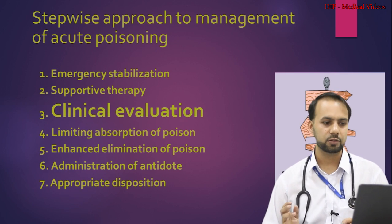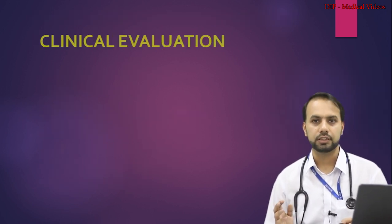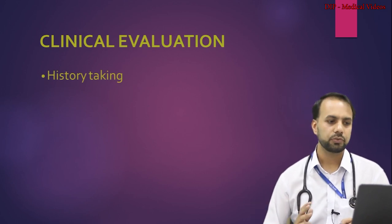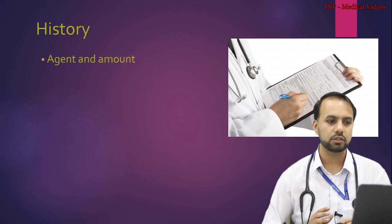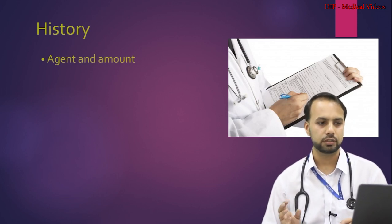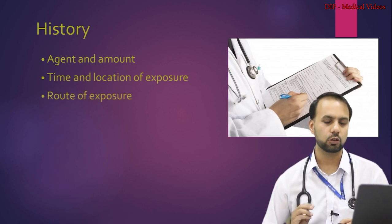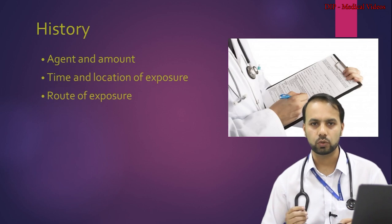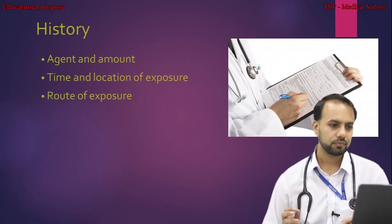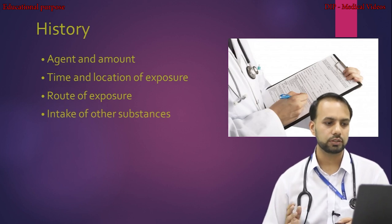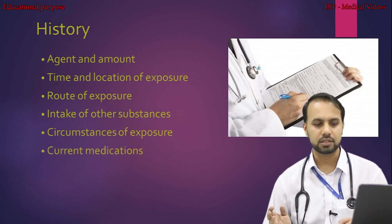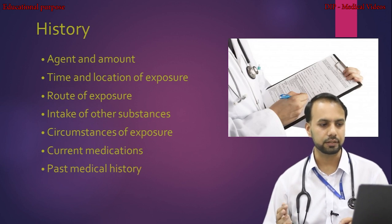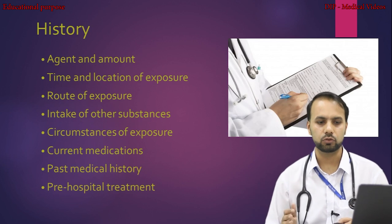The third step is clinical evaluation, which includes detailed history taking, physical examination, and toxicological screening. In history taking, note which poison was ingested, the amount, time and location of exposure, and route of exposure — oral, injectable, transdermal, or inhalational. Also document intake of other substances, circumstances of exposure, current and past medications, and pre-hospital treatment received before arriving at the facility.